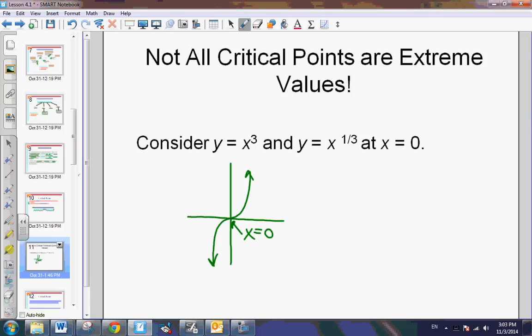Because notice, the slope is positive the entire time. The slope does not change from positive to negative. In fact, if this is the f of x function, if we were to graph the f prime function of this, it would look something like this, right? So, notice, the derivative is positive the entire time. And, at 0, the derivative is 0.